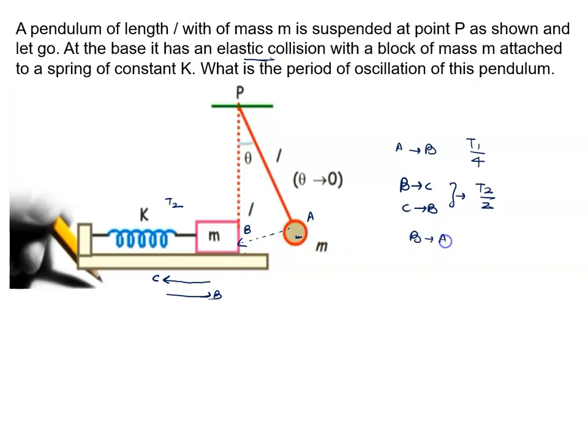Again B to A, again time will be T1 by 4. So what is total time period of oscillation? That is T1 by 2 plus T2 by 2.